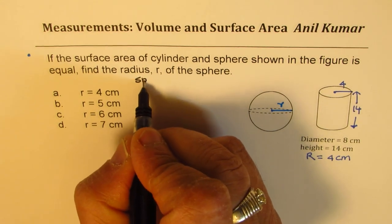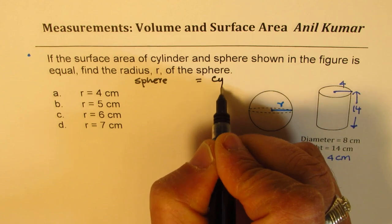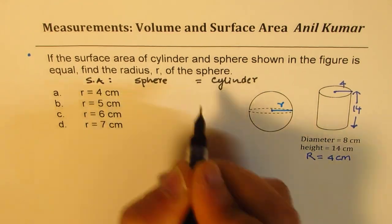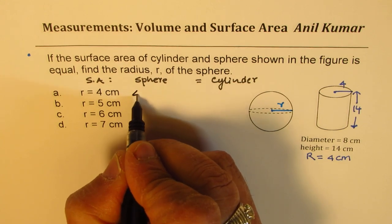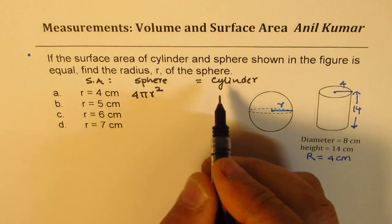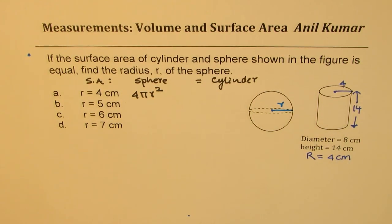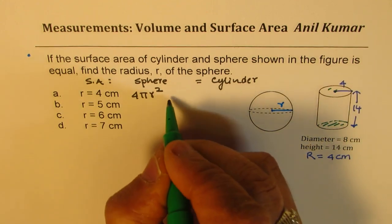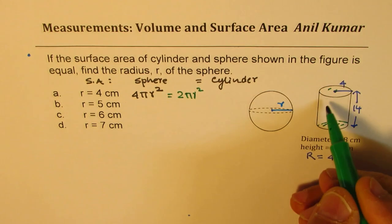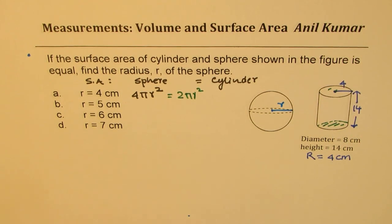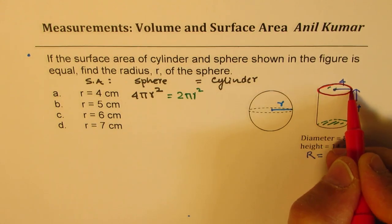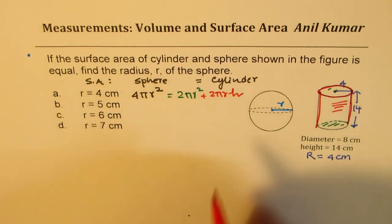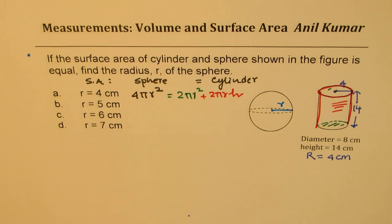The surface areas of the cylinder and sphere are equal. For a sphere, the surface area is 4π R². For a cylinder, we have three surfaces: the two circular surfaces with area 2π r², and the lateral surface 2π r h. So we set 4π R² = 2π r² + 2π r h, where R is the sphere radius we need to find and r = 4, h = 14.